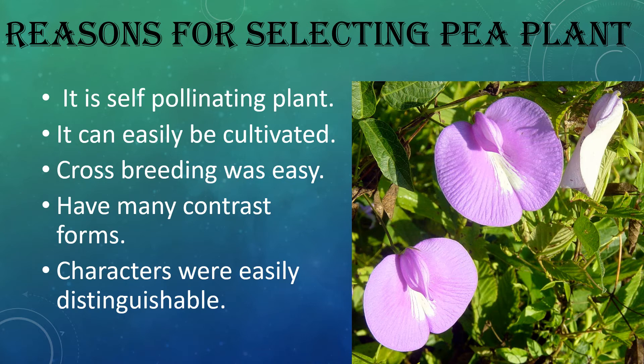First, the plant was self-pollinating, so there is no chance of contamination and the plants will be pure for their traits. Secondly, this plant can be easily cultivated, and cross-breeding was easy to perform. Also, the pea plant has many contrasting forms that can easily be identified.